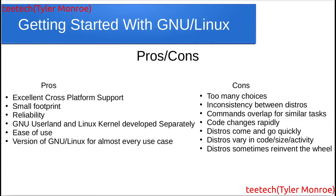The GNU userland and Linux kernel are developed separately. The kernel is the brains of the system — it takes all of a computer's hardware resources like the CPU, RAM, and hard disk, and bridges them so that software can make system calls into the kernel in whatever programming language and talk to all those devices and use the resources.